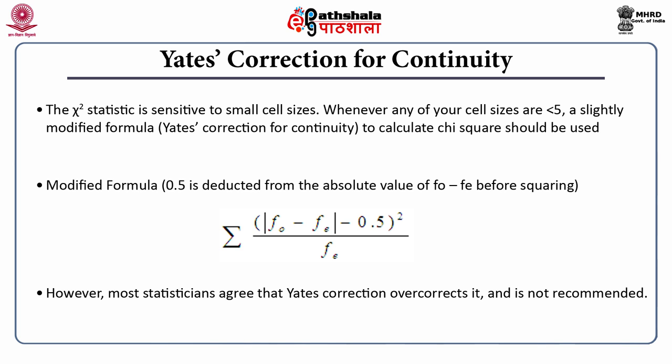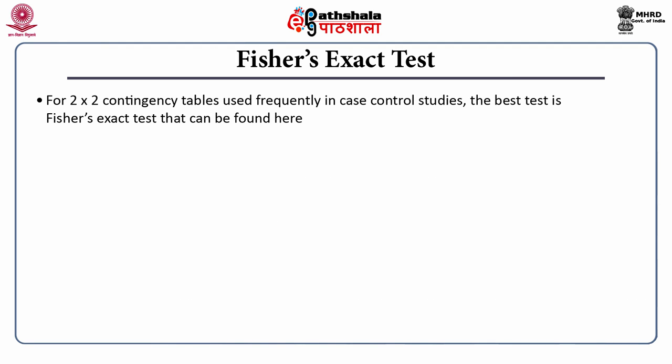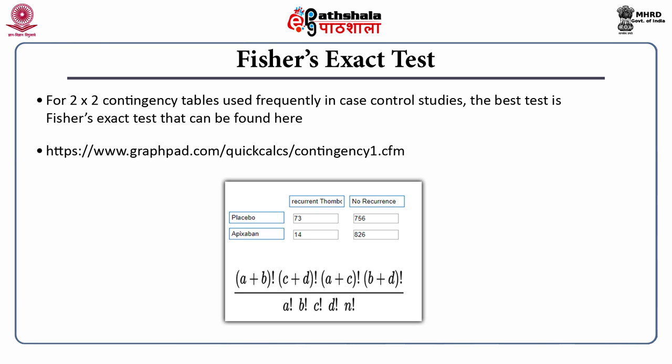If you are working with a two-by-two contingency table — often used for case-control studies in clinical research — the best test is Fisher's exact test, which can be found in the GraphPad QuickCalcs link given in the module. All you have to do is input your data: the observed frequencies into the cells — for example, 73, 756, 14, and 826 — click on it, and that will give you the chi-square test statistic via Fisher's exact test.